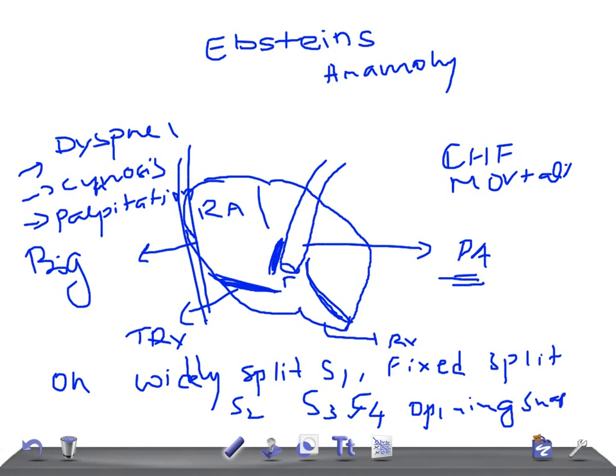And as I said, there is a cyanosis because of the shifting from the blood from right to left shunt.